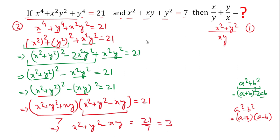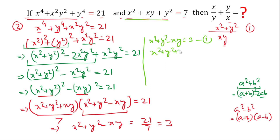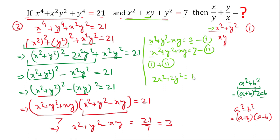So: x² + y² - xy = 3 — call this Equation 1. And x² + xy + y² = 7 — call this Equation 2. To find x² + y², we add Equation 1 and Equation 2. Adding gives 2x² + 2y² = 3 + 7 = 10, and the xy terms cancel out.